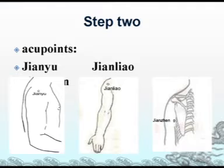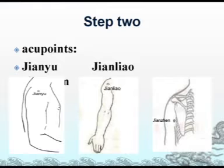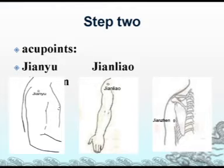There are easy ways to find them. First, Jian Yu and Jian Liao: when your arm is abducted or swung forward, two depressions on the shoulder will appear. The anterior depression is Jian Yu, and the other one is Jian Liao. Next, Jian Zhen is located one cun above the posterior end of the axillary fold. You also need to identify where your most painful spot is.